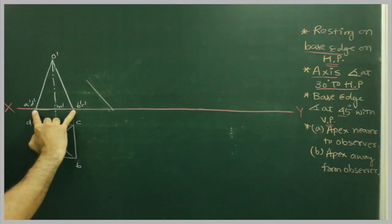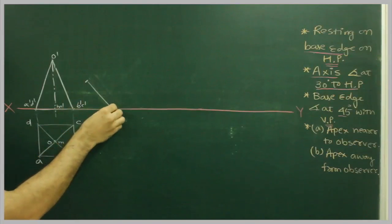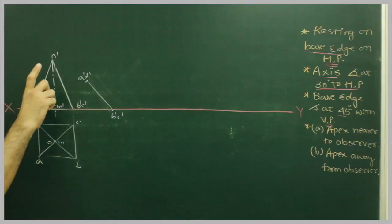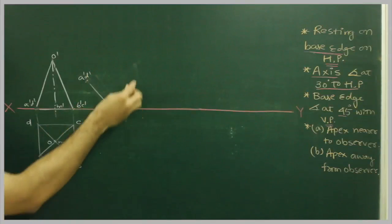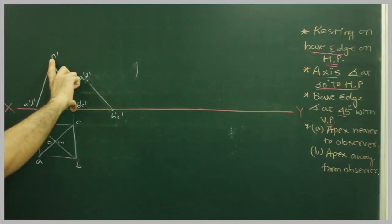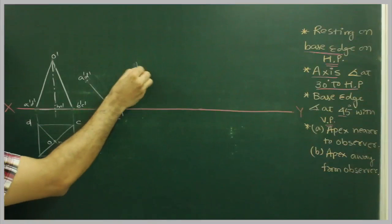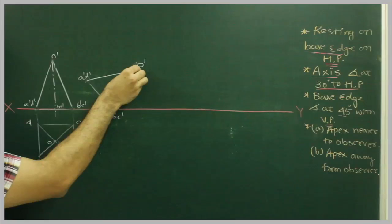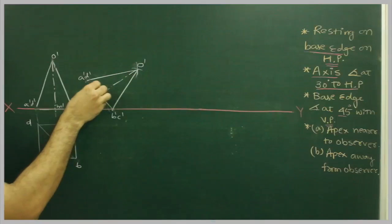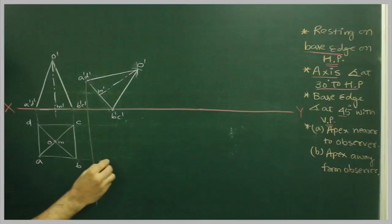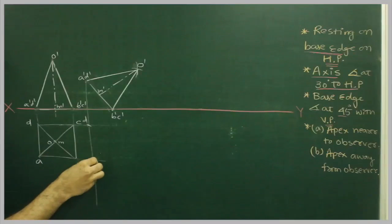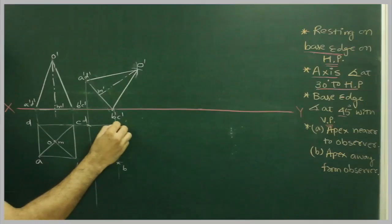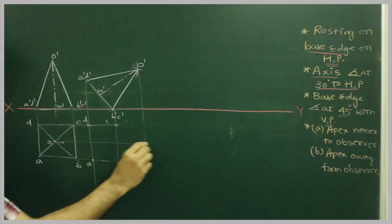We will take B-dash C-dash to A-dash D-dash and cut on this side. This is A-dash D-dash, this is B-dash C-dash. Then we will take A-dash D-dash to O-dash and cut on this side. Same way we will take B-dash C-dash to O-dash and cut on this side. So we get O-dash. We can draw the axis, then draw A-dash D-dash, getting D as well as A, then same way B-dash C-dash, getting B and C, then O-dash and O.